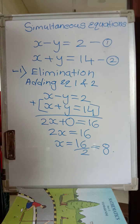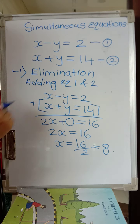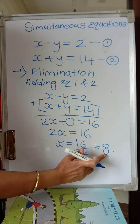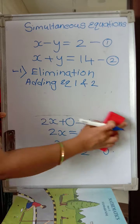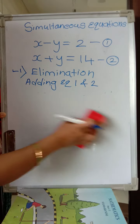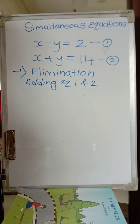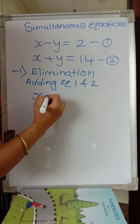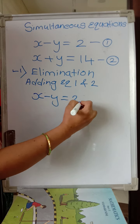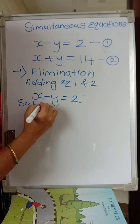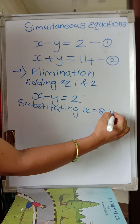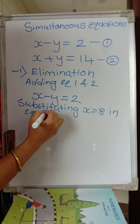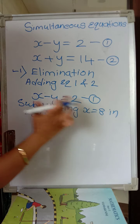After getting x equal to 8, how do we find y? Substitute this x value into either equation. Let us take equation 1: x minus y equals 2. Substituting x equals 8 in equation 1, we get 8 minus y equals 2.